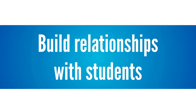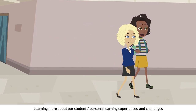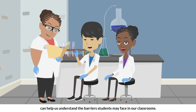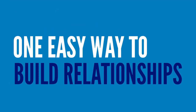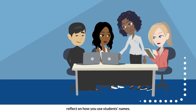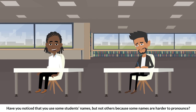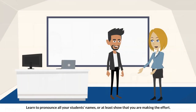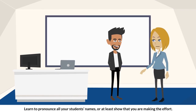Build relationships with students. Learning more about our students' personal learning experiences and challenges can help us understand the barriers students may face in our classrooms. One easy way to build relationships is to reflect on how you use students' names. Have you noticed that you use some students' names but not others because some names are harder to pronounce? Learn to pronounce all your students' names, or at least show that you are making the effort.